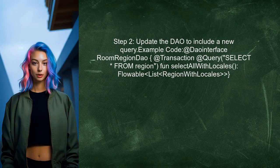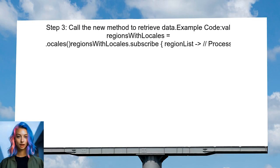Next, the user should modify the DAO to include a new query that retrieves the region along with its associated locales. This will allow for a single query to fetch all necessary data. The user can then call this new method in their application to retrieve the region entities along with their corresponding locales in one go, eliminating the need for multiple queries.